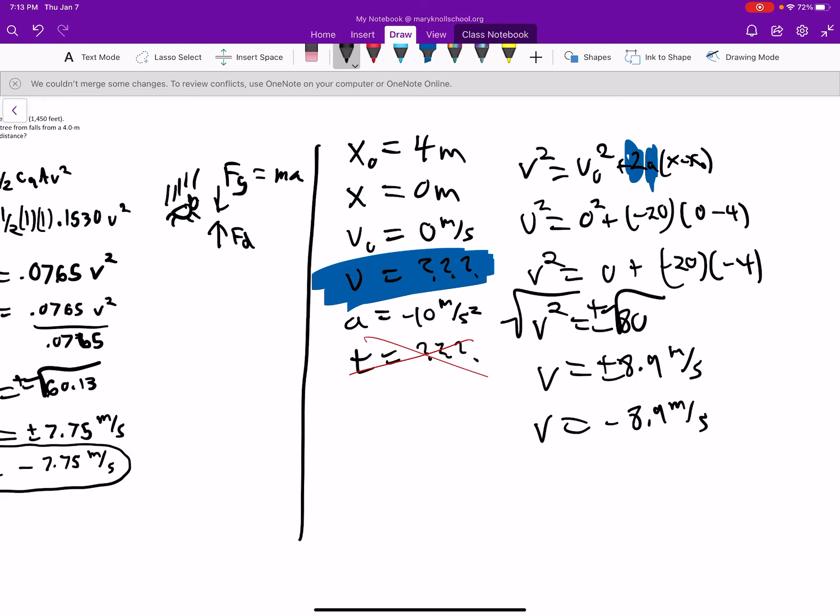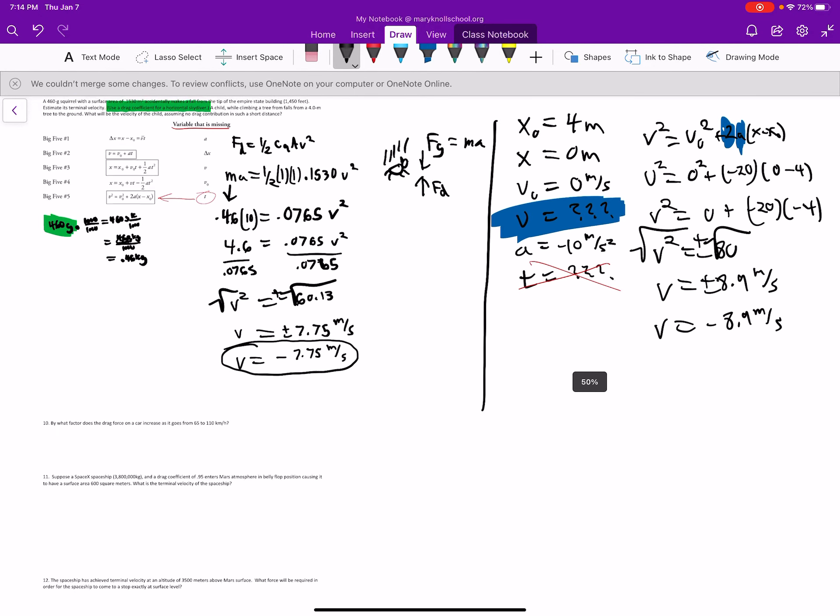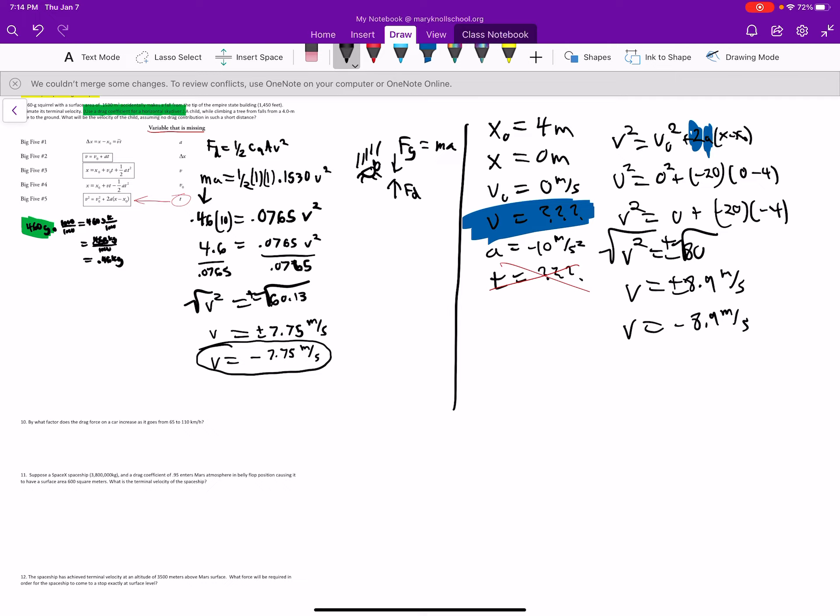All right. So here's the question. Would you rather be a squirrel jumping off the Empire State Building, or would you rather be somebody jumping from a 4-meter tree? I would rather be the squirrel because I'd rather hit the ground at 7.75 meters per second than hit the ground at 8.9 meters per second. Oh, negative 8.9 meters per second. So this kind of explains why squirrels are so daring in the trees. Have you ever seen squirrels chase each other in the trees? They chase each other and run around on the tree like their lives don't depend on it. And that's exactly the case. Their lives don't depend on it. It's as if we were in a 4-meter tree playing around, or even less. So, yeah, there you go.